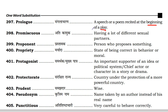A prologue is something recited before a speech or poem — an introductory piece. Next is promiscuous — having a lot of different sexual partners. Next is proponent — a person who proposes something or puts forward a proposal.